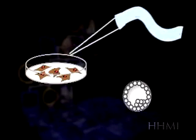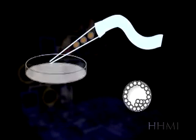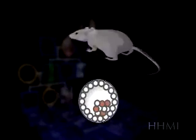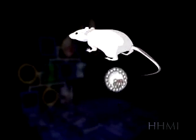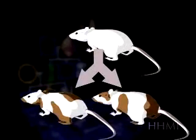For the next step, blastocysts are collected from an albino mouse. ES cells are then injected into the blastocysts under the microscope, and the blastocysts are implanted into a foster mother and allowed to develop. The offspring that results is a chimera.